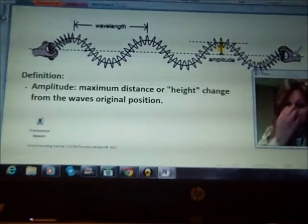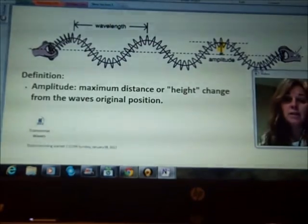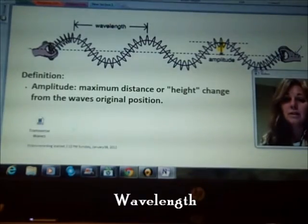That dotted line is the original position. And then the other part of the wave we want to learn about is the wavelength. And I'll highlight that right here.